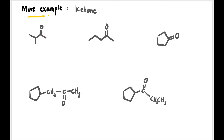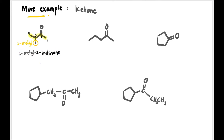Now moving on to ketone. The difference from aldehyde is that the carbonyl in ketone is in the middle, not at the end. So if we have four carbons and the carbonyl is at carbon two, we must mention the position of C double bond O. So it is 2-butanone.